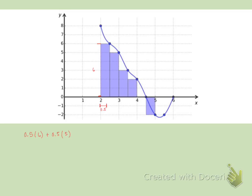From three to three and a half, the width is 0.5, and the height is 3. From three and a half to four, the width is 0.5, and the height is 2.